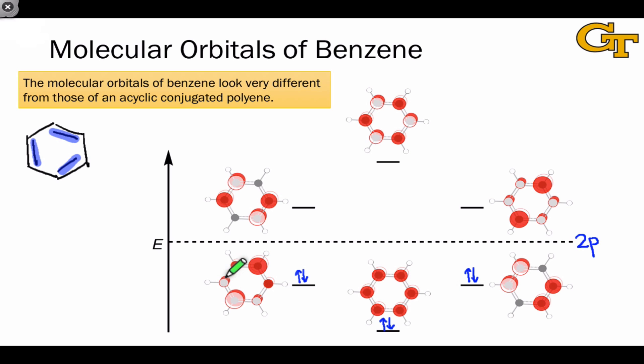The next two levels, higher in energy, have two nodes, two locations where the wave function changes sign, and we have destructive interference. Since both of these orbitals have two nodes, we find them at the same energy.